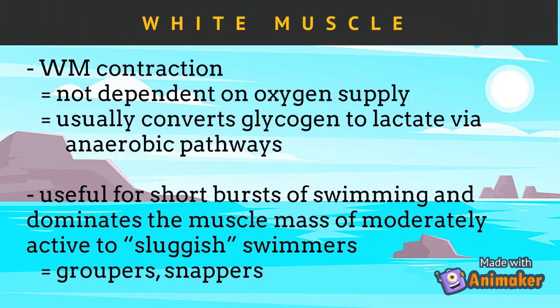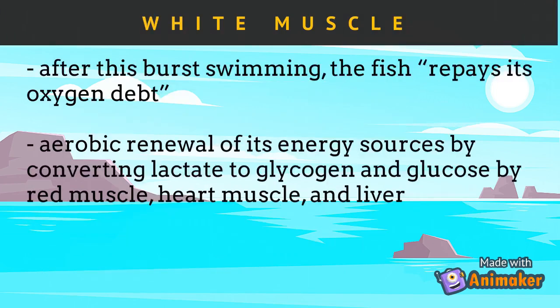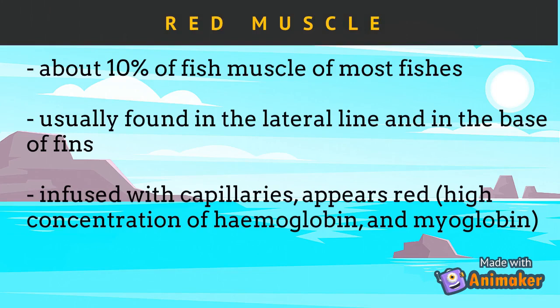White muscle contraction is not dependent on oxygen supply. It usually converts glycogen to lactate via anaerobic pathways. White muscle is useful for short bursts of swimming and dominates the muscle mass of moderately active to sluggish swimmers. Groupers and snappers are examples of fish which are sluggish swimmers using mostly their white muscles. After burst swimming, the fish repays its oxygen debt by aerobic renewal of its energy sources, converting lactate to glycogen and glucose by the red muscle, heart muscle, and liver.